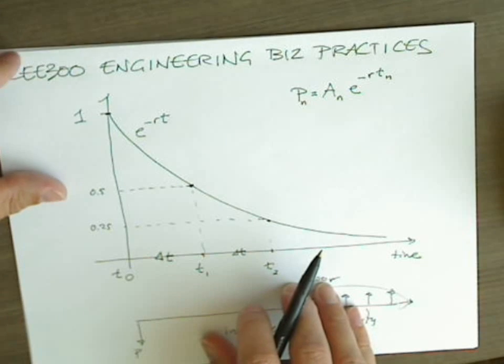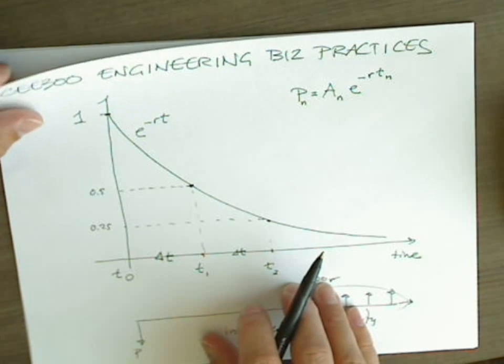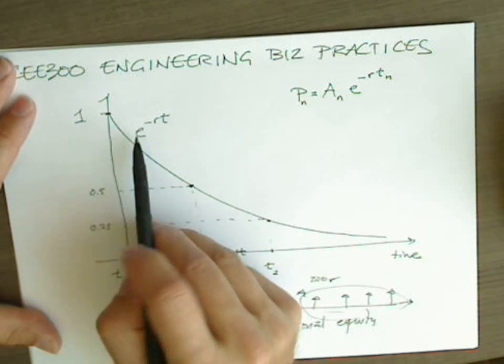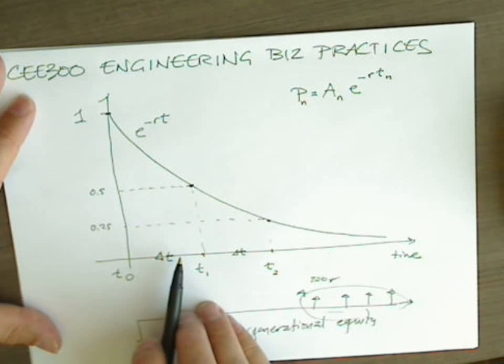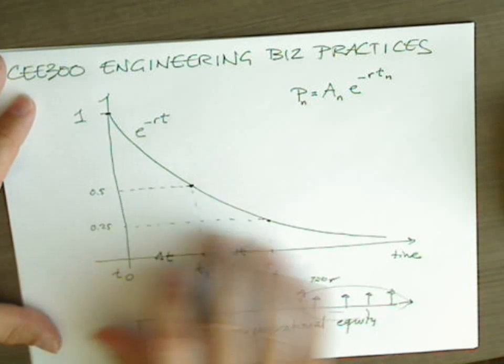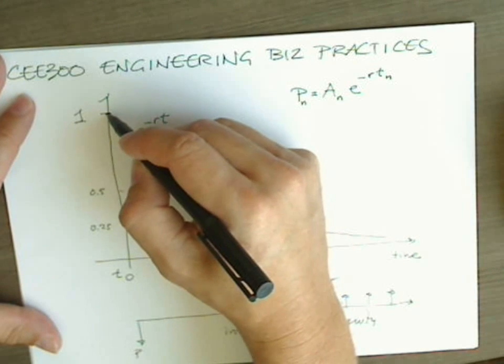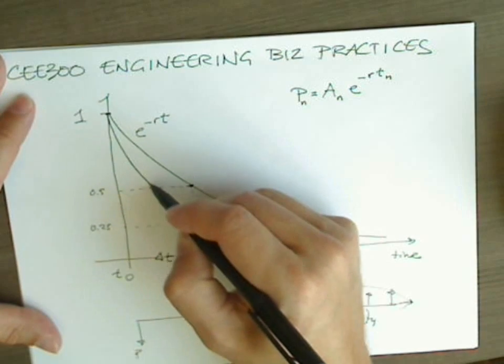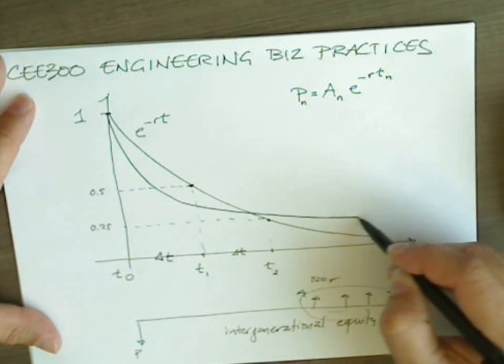So I said in this video I'd show you an alternative way of looking at it. As a matter of fact, e to the negative r, t is not the only way that you could reasonably expect to discount future events. Let's look at another function. And that function would have a shape like this.